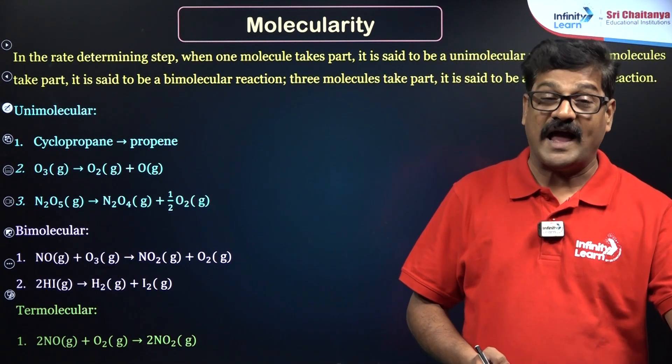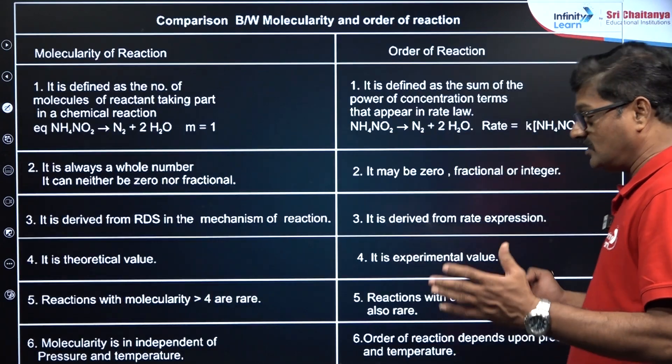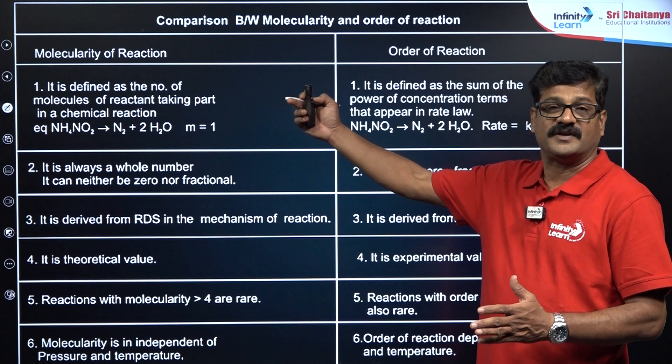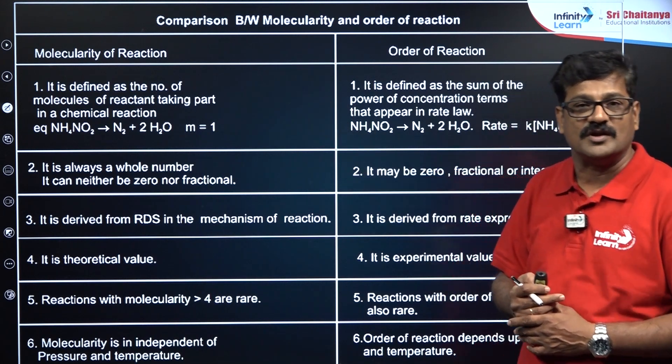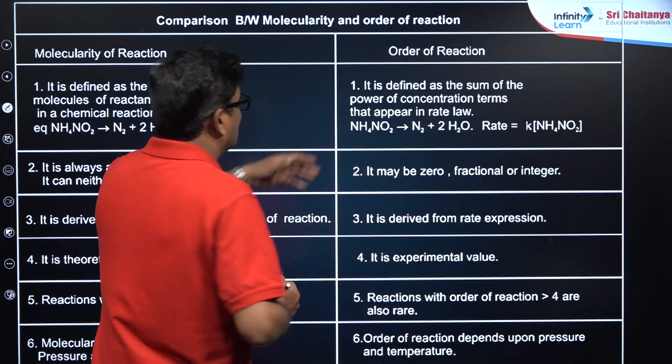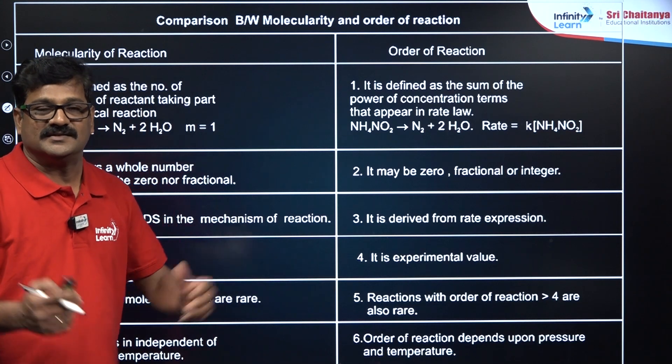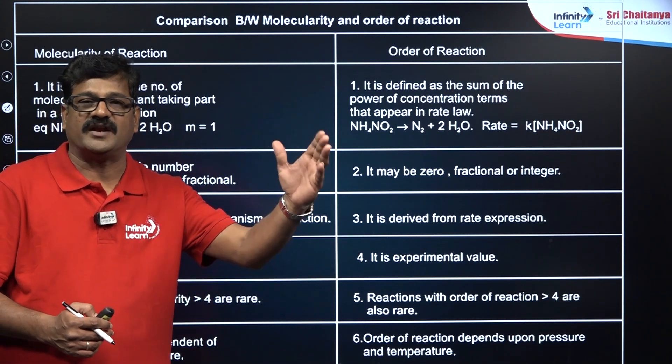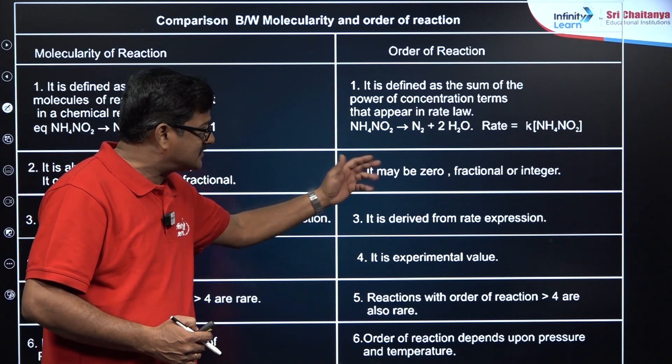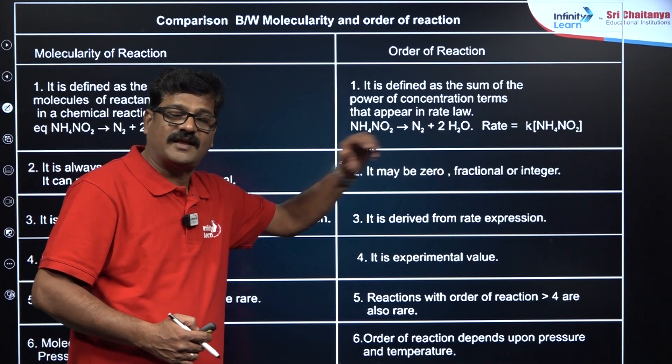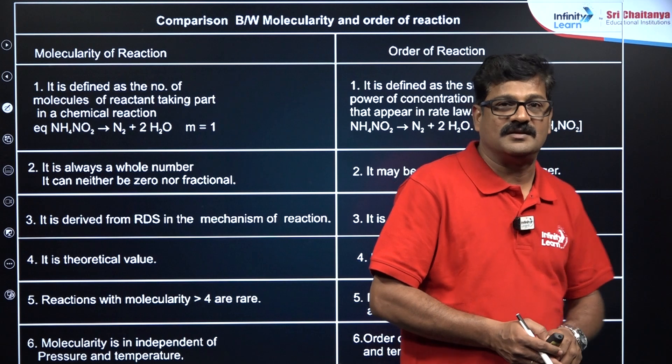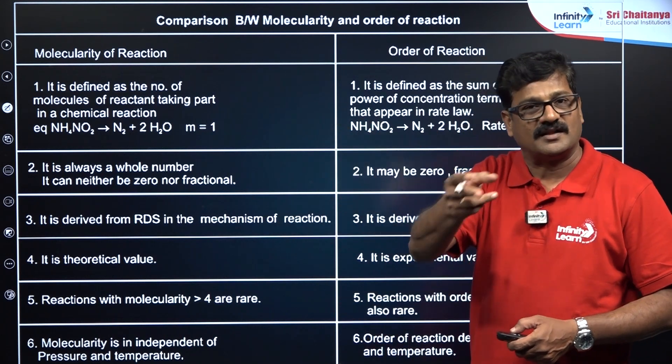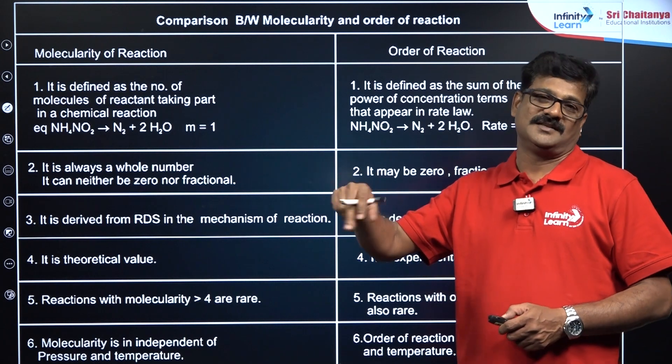Let us see the difference between order and molecularity. Molecularity is the number of reacting species making a collision in the rate-determining step, whereas order is the sum of the powers of the exponents in the rate law expression. Order can be 0, any integer, or a fraction, but molecularity is always a whole number: 1, 2, or 3. Greater than 3 is not possible, less than 1 is not possible, and fractional is not possible.